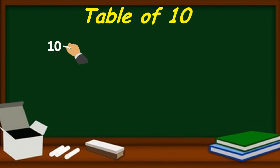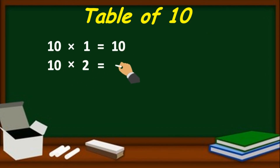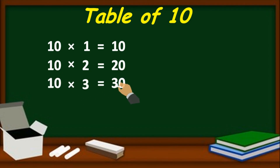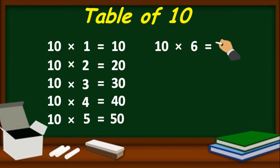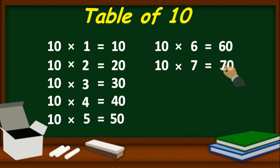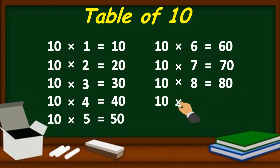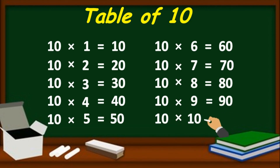Table of 10. 10 one's are 10, 10 two's are 20, 10 three's are 30, 10 four's are 40, 10 five's are 50, 10 six's are 60, 10 seven's are 70, 10 eight's are 80, 10 nine's are 90, 10 ten's are 100.